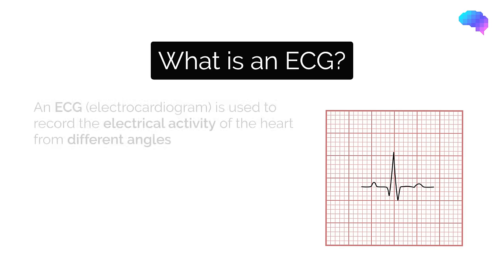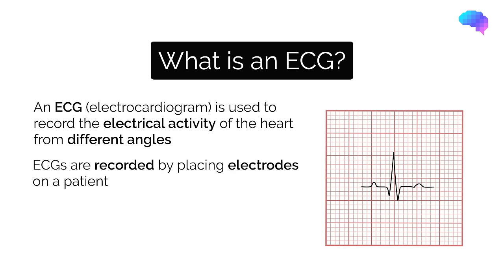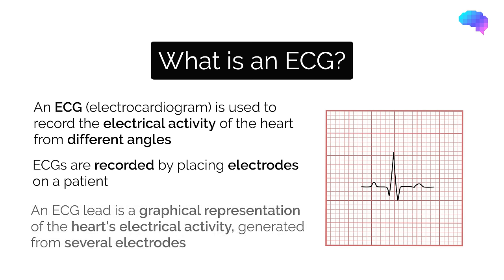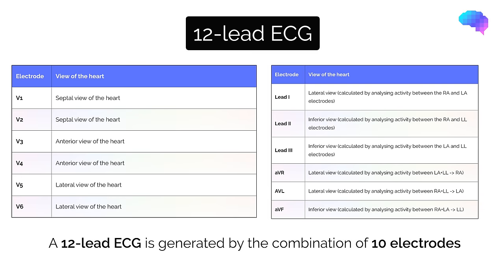Let's start by discussing the basic principles of an ECG. An ECG is used to record the electrical activity of the heart from different angles to identify and locate pathology. ECGs are recorded by placing electrodes on the patient — these are conductive pads that record the electrical activity of the heart. These electrodes create a graphical representation of the heart's electrical activity which we refer to as the ECG leads. A 12-lead ECG produces 12 separate graphs, however only 10 physical electrodes are actually attached to the patient to generate the 12 leads.